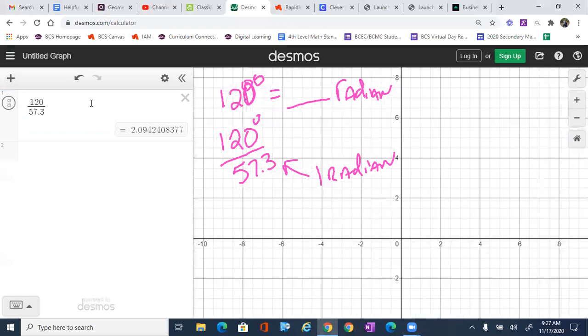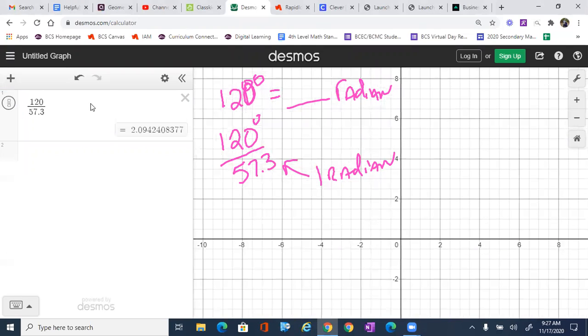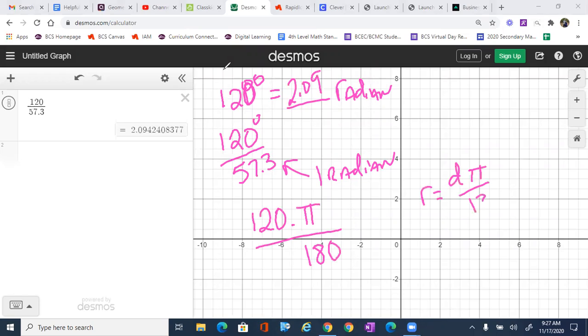Now, that's not exactly, remember, that's an approximation. So we can also say 120 degrees times π all over 180. Remember, that is our converting from degrees to radians. So degrees to radians is going to be the degree times π over 180. That's another way we can do it. We can simplify.